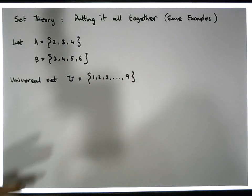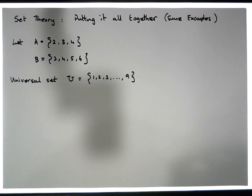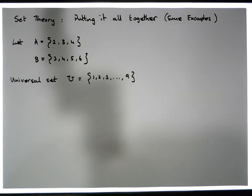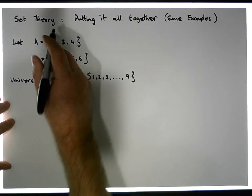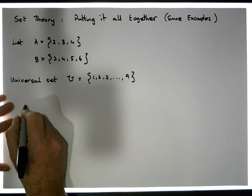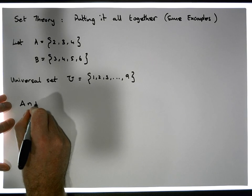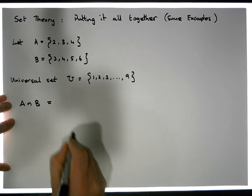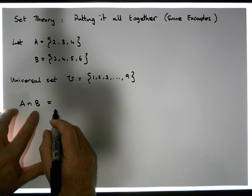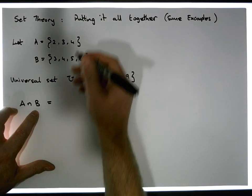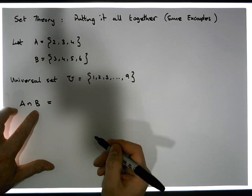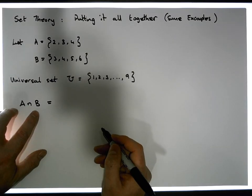It's actually important when we define sets that we always define them in relation to some universal set — I've specified that in the previous videos. So let's do some straightforward examples. The intersection of A and B: we know by definition that the intersection is what two sets share — what two sets have in common with respect to their members.